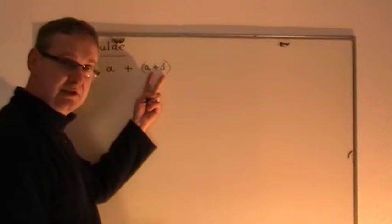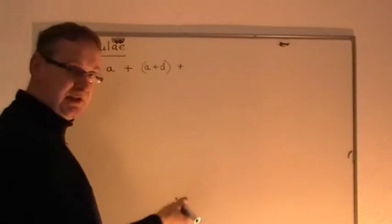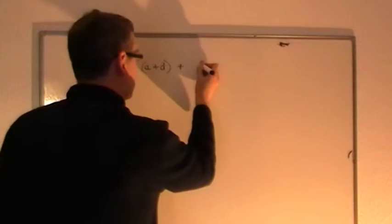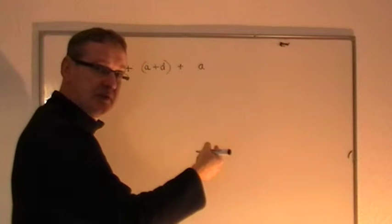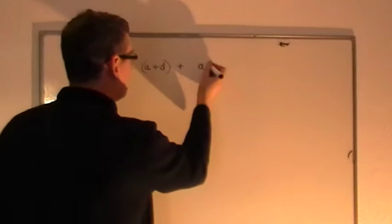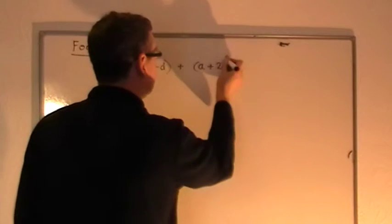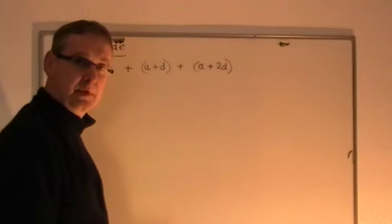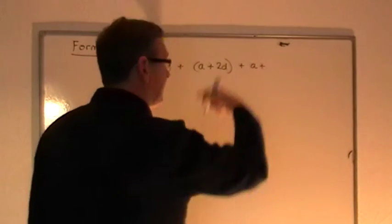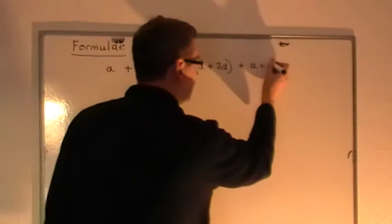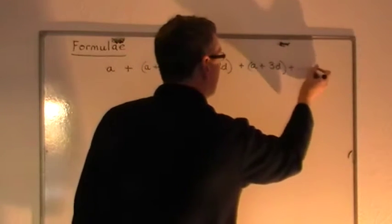So in a bracket I've written the second term as A plus D. The next term is going to be that term, A plus D, and you add to it another common difference value, another D. So what I end up with is A plus 2D for the next term. And likewise for the next term I would end up with A plus 3D, and so on.